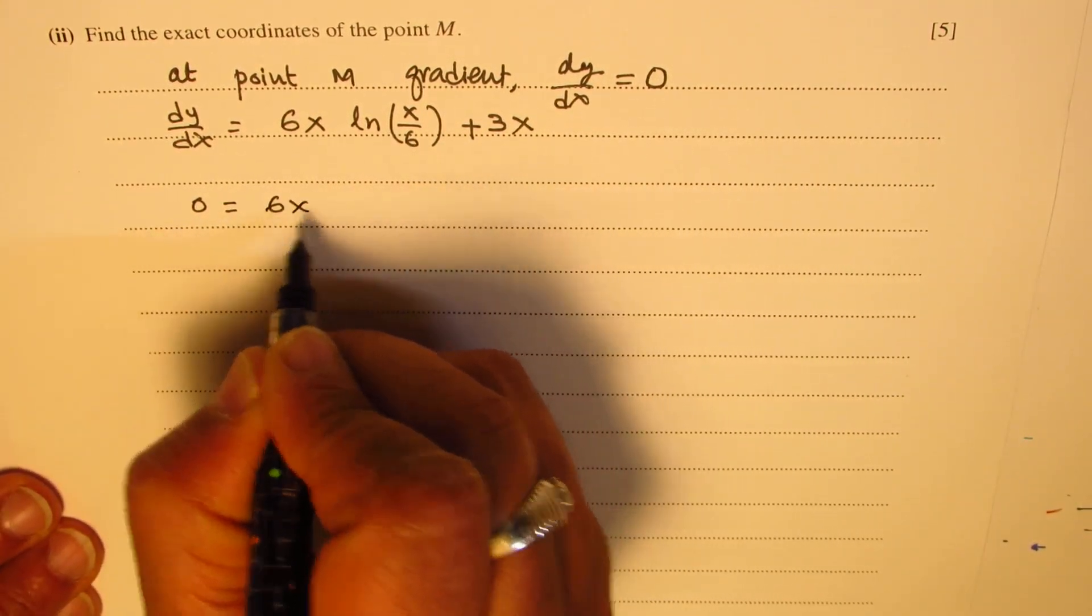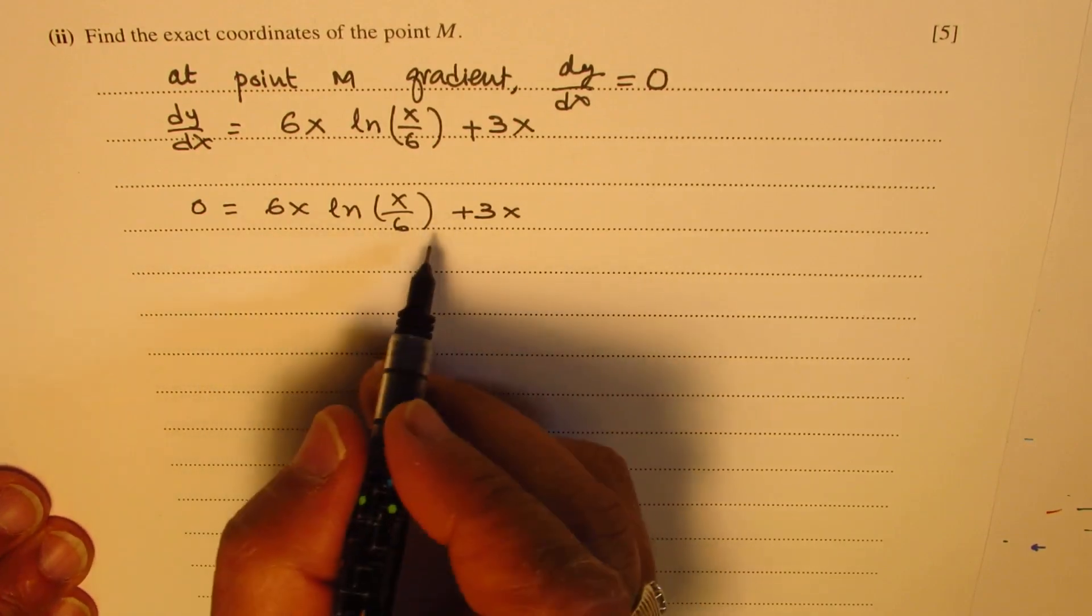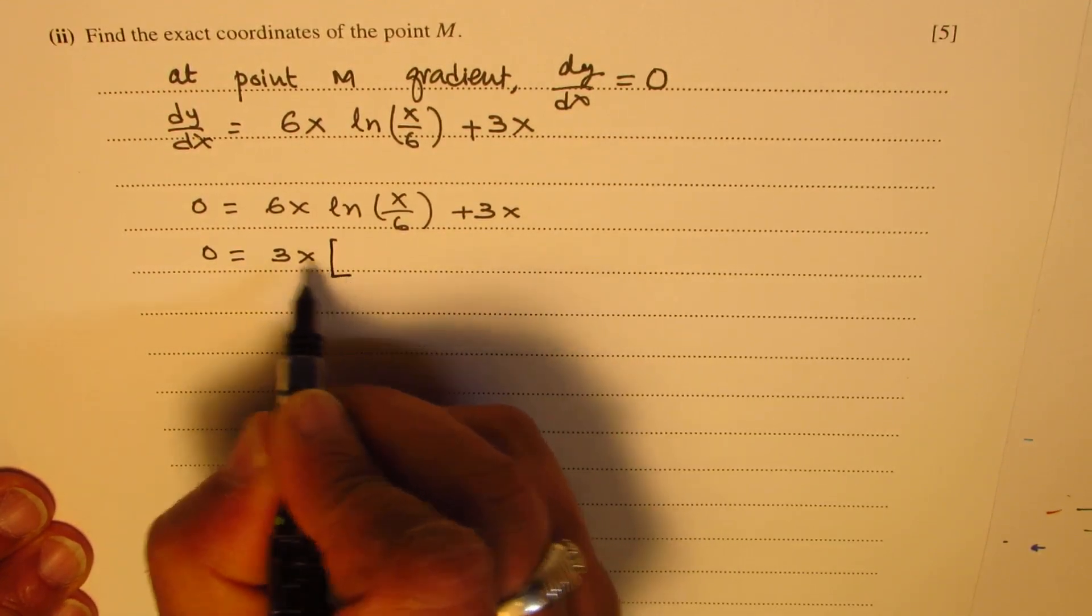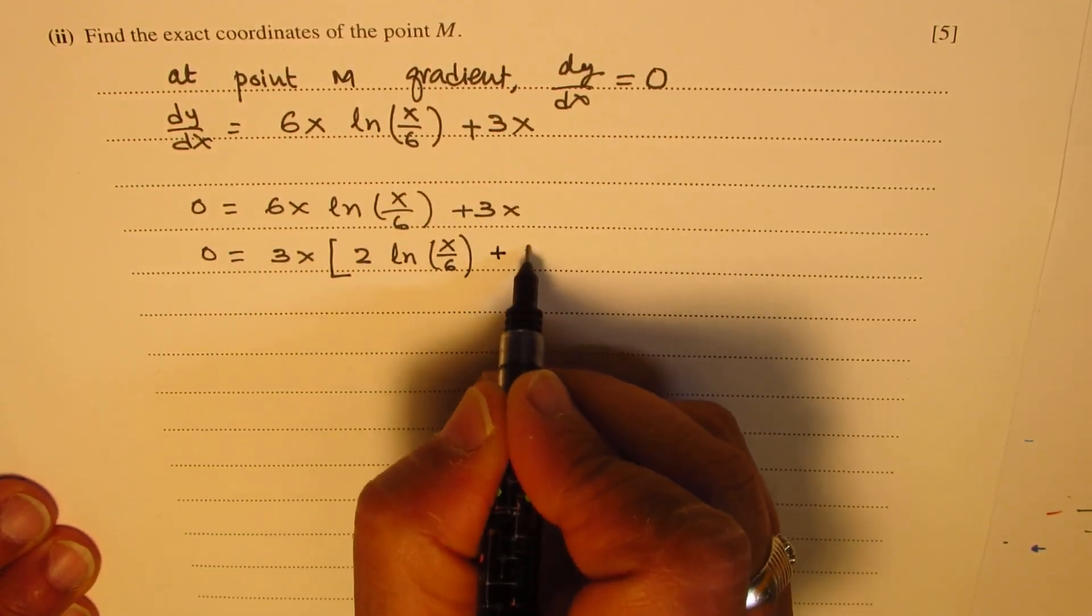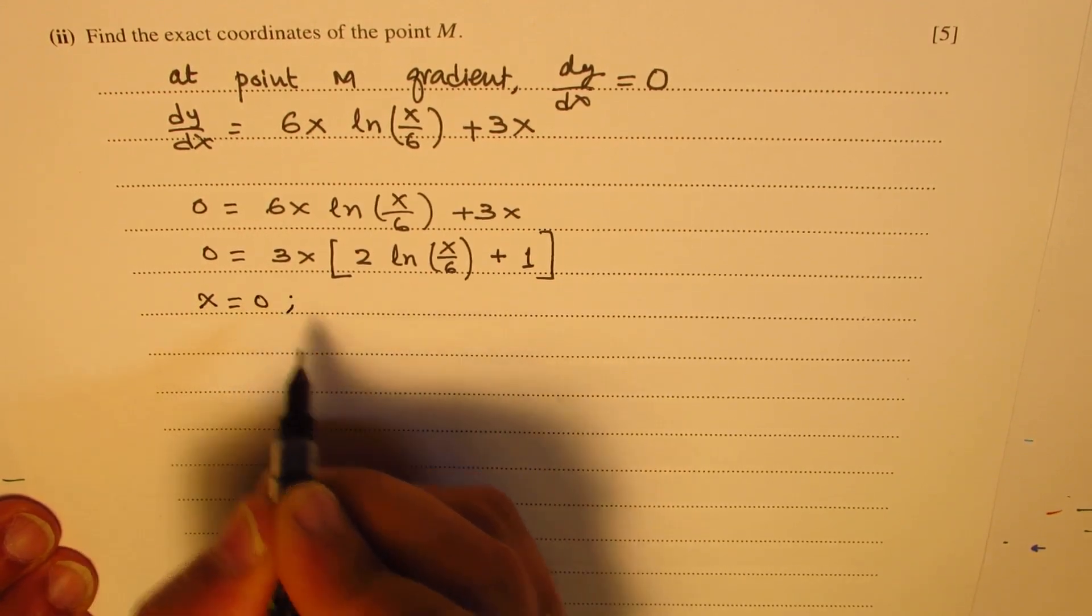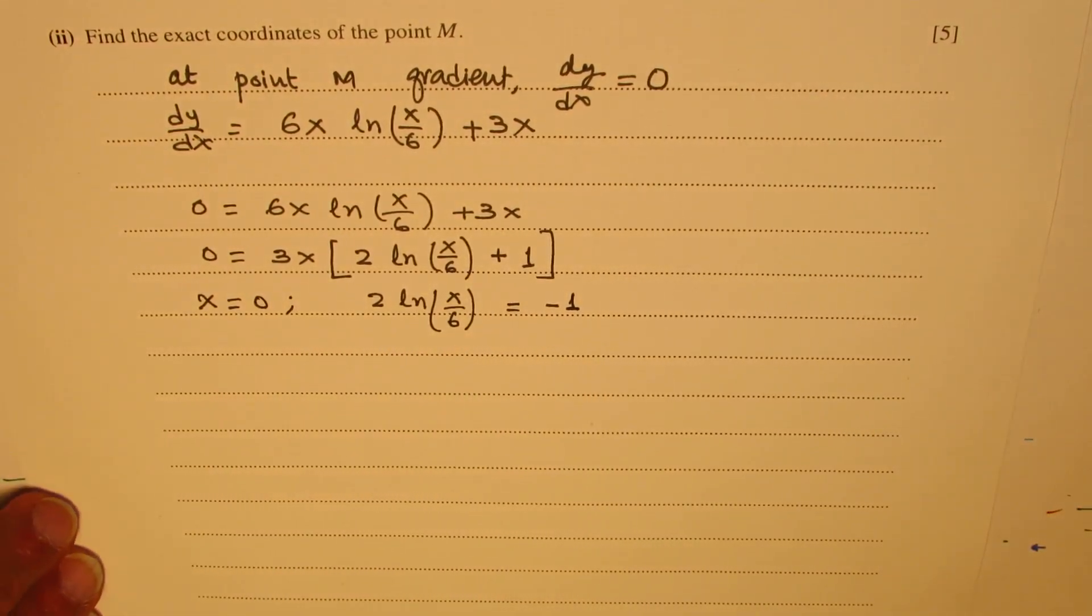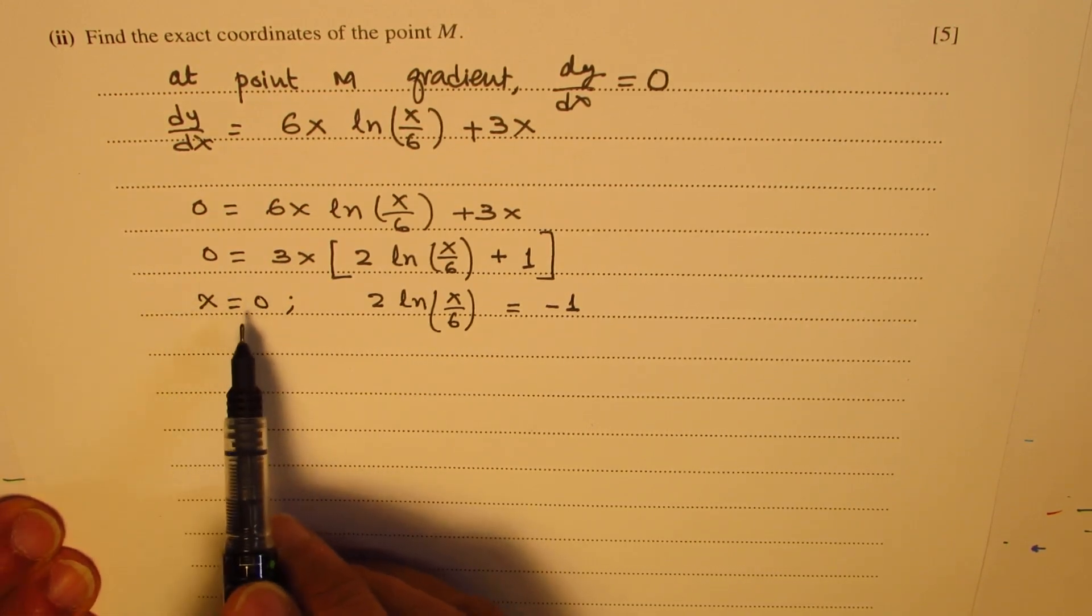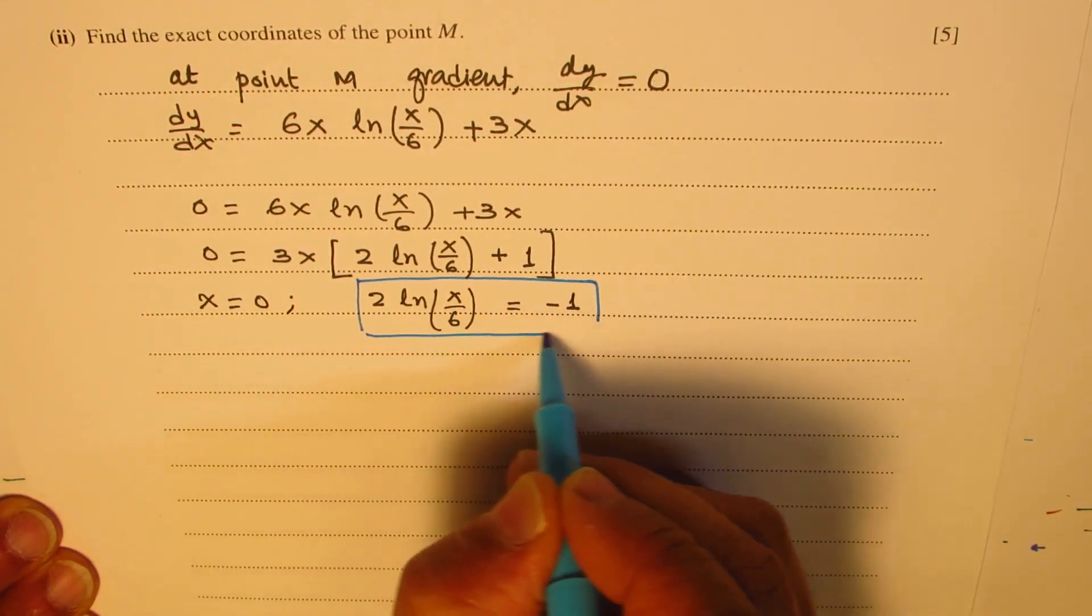So 0 equals 6x ln(x/6) plus 3x. Let's factor this. We can factor 3x. So once you factor, you get 3x times [2 ln(x/6) plus 1]. So there are two solutions. One, of course, is x equals 0. And the other one here is that 2 ln(x/6) equals minus 1. So x equals 0 is not this point, it is at the origin that you have a horizontal tangent. Now, let's solve for this particular equation to get our solution at M.